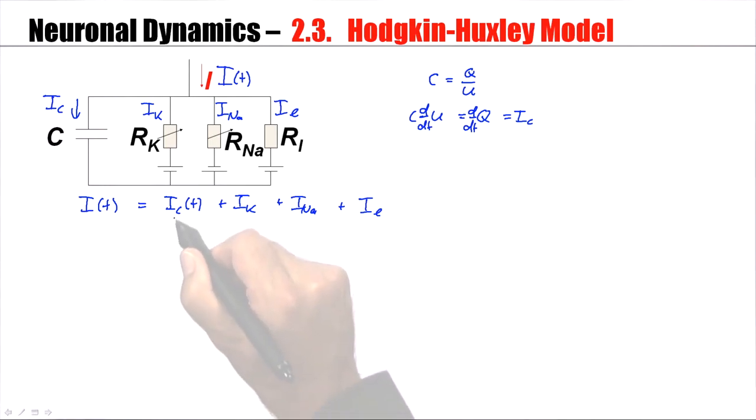This is the capacitive current that I have already discussed last week. So, let's put this in here. I have C dU/dt for IC. C dU/dt is equal to the stimulating current, and then I shift the three other ion currents to the other side. So, I have minus IK, minus INa, minus IL.